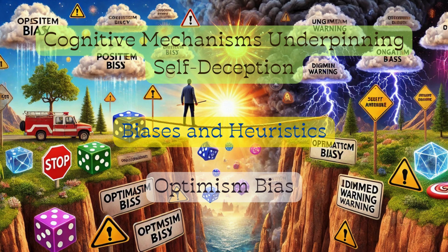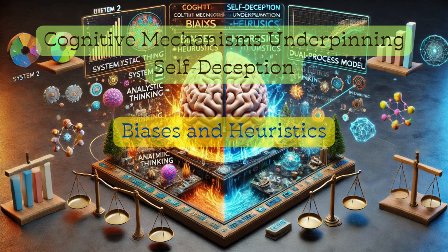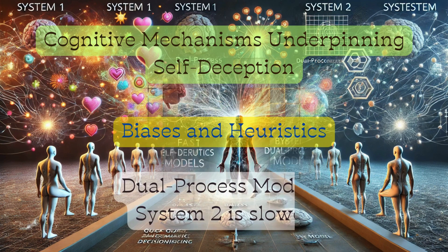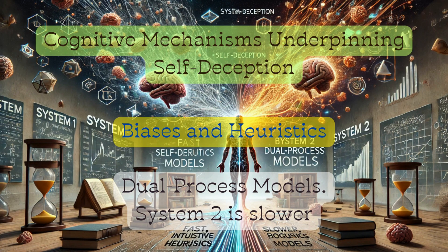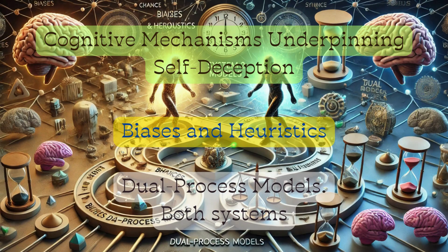Biases and heuristics also play a role. Confirmation bias involves seeking evidence that confirms pre-existing beliefs while ignoring disconfirming data. Optimism bias involves overestimating positive outcomes and underestimating negative consequences. The Dual Process Model explains two modes of thinking: System 1, which is fast, automated, and emotional, and System 2, which is slower, logical, and deliberate. Both systems influence our decisions and behaviors.